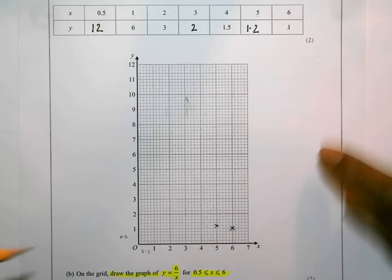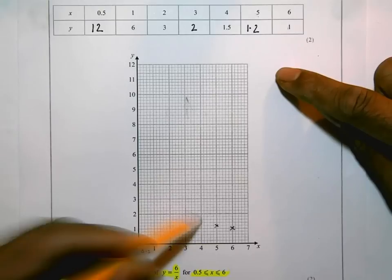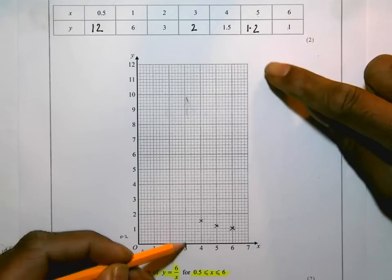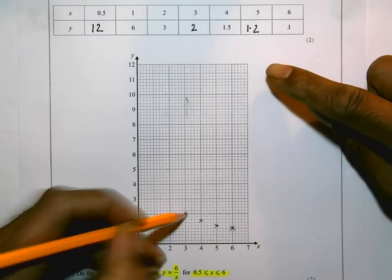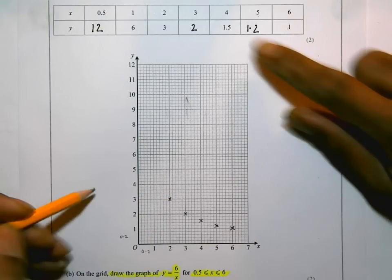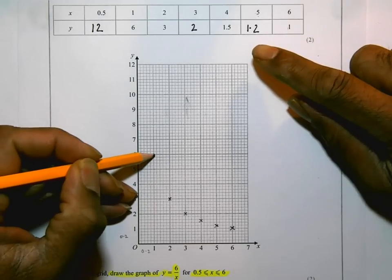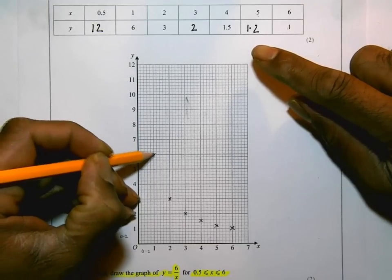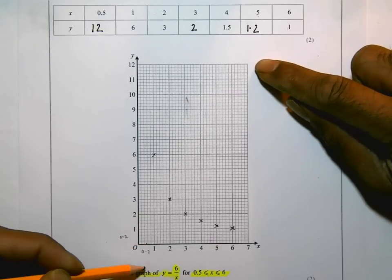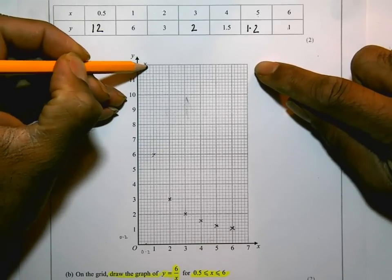So I'm going to quickly go through the rest. When x is 4, y is 1.5. So that's a bit more tricky. It's between two squares. There it is. When x is 3, y is 2. Got that point there. When x is 2, y is 3. Got that point there. When x is 1, y is 6. So I'm going to be careful with this. There. And the next one is when x is 0.5. So 0.5 is there. So between those two, that tiny square. It's all the way up to 12. So there you go. So there are all the points plotted.